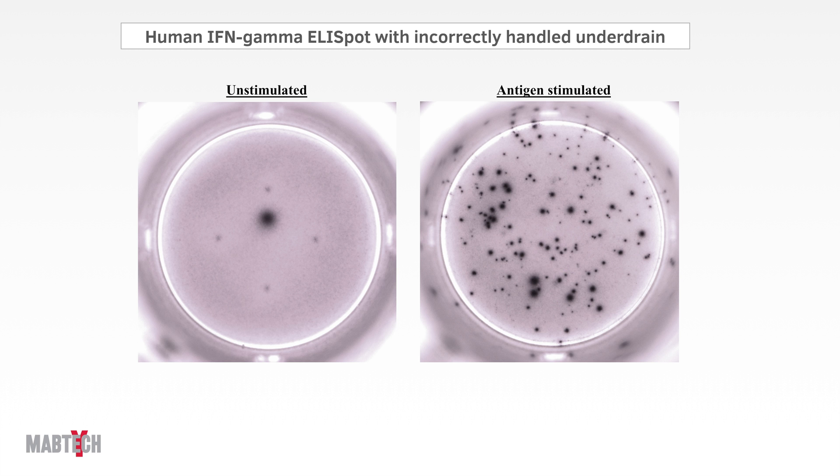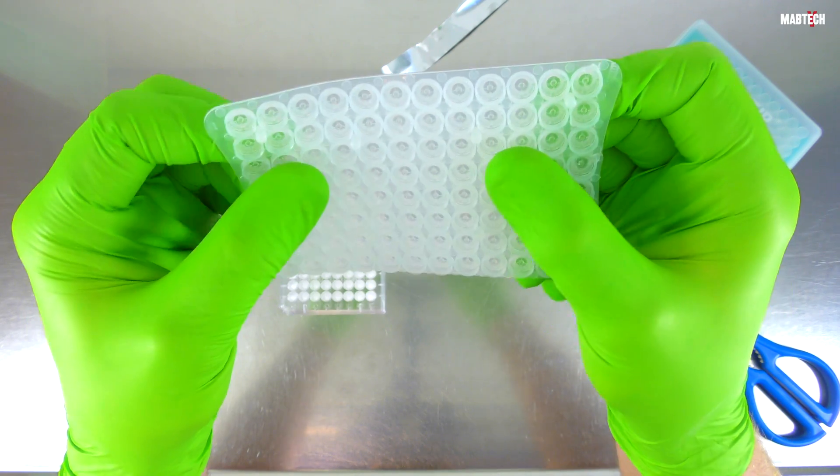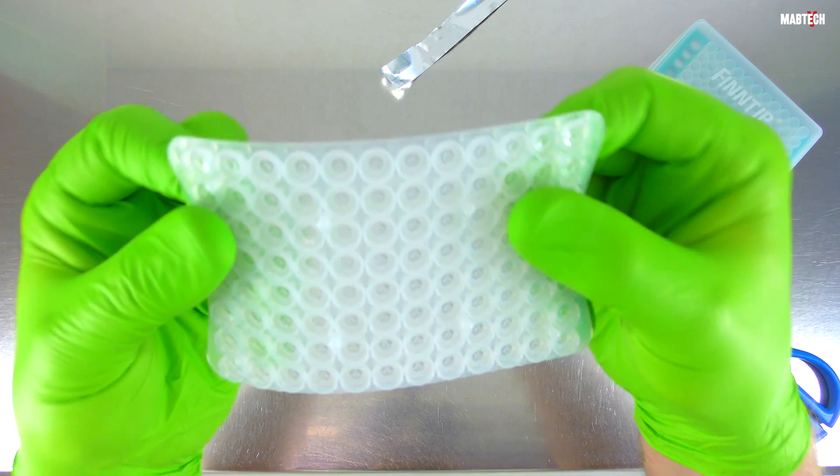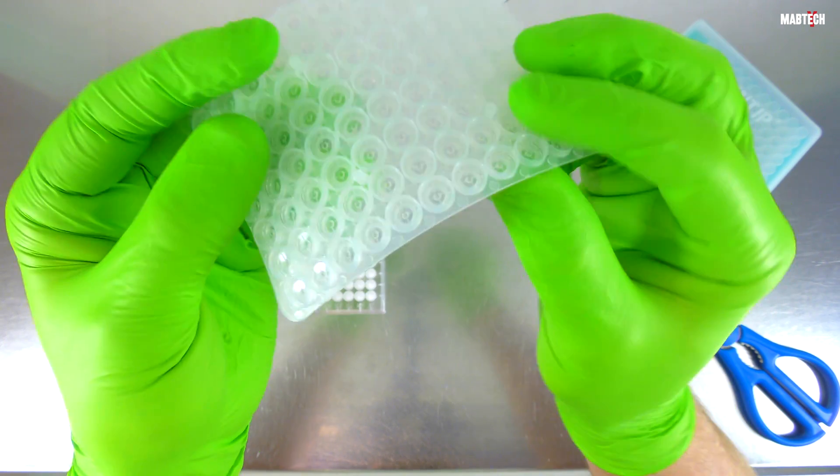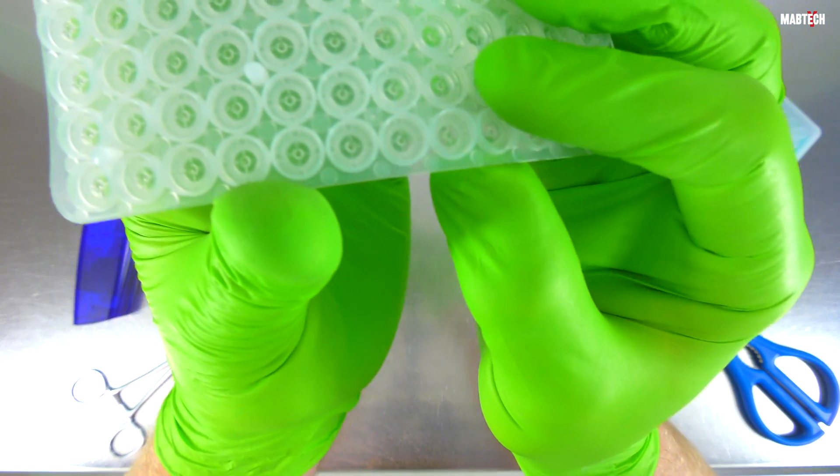One might ask, why do we get four unspecific dots from the inner structures of the underdrain? Well, let's go back to the video and inspect the removed underdrain a little bit more in detail, closer to it.